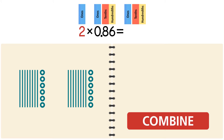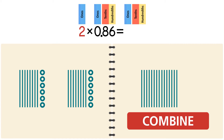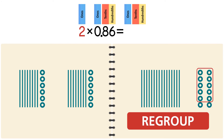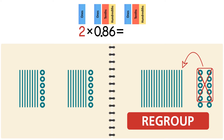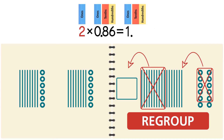Combine the tenths. We have 12 hundredths — we can't put 12 in the hundredths column, so we have to regroup. Now we have 17 tenths — we can't put 17 in the tenths column, so we have to regroup 10 tenths to make one one. We write the one in the ones column. We're left with seven tenths and two hundredths. Our answer is 1.72.